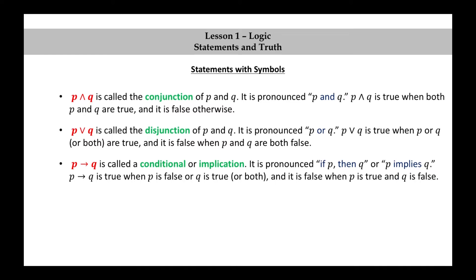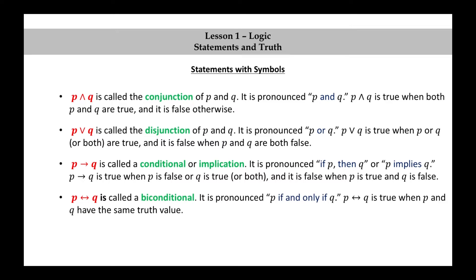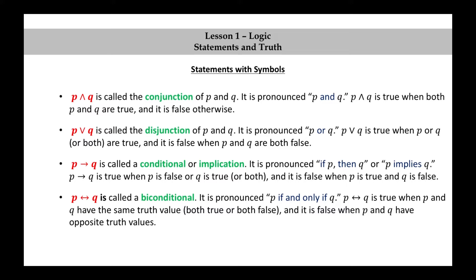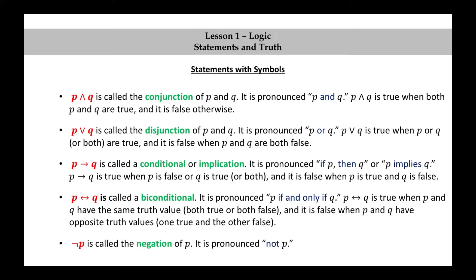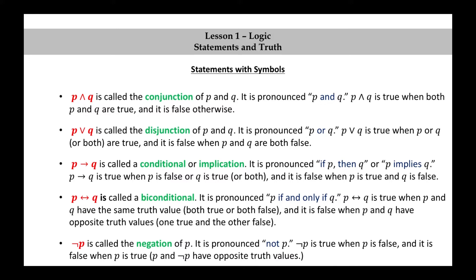P implies Q is false when P is true and Q is false. P double arrow Q is called a biconditional. It is pronounced P if and only if Q. P if and only if Q is true when P and Q have the same truth value — in other words, both true or both false — and it is false when P and Q have opposite truth values, one true and the other false. The negation of P is pronounced not P. Not P is true when P is false and is false when P is true. P and not P have opposite truth values.